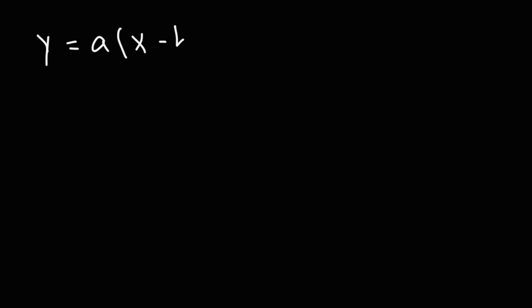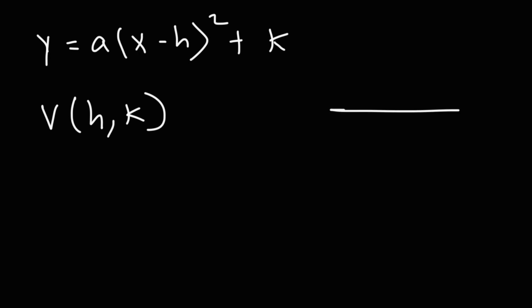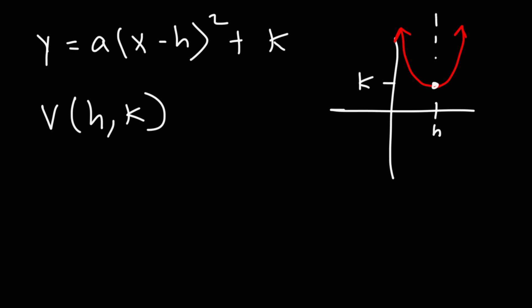Sometimes you might have a quadratic equation written in vertex form: y equals a times (x minus h) squared plus k. In vertex form, the coordinates of the vertex of the parabola are (h, k). So on a graph, the parabola has its vertex at h and k.